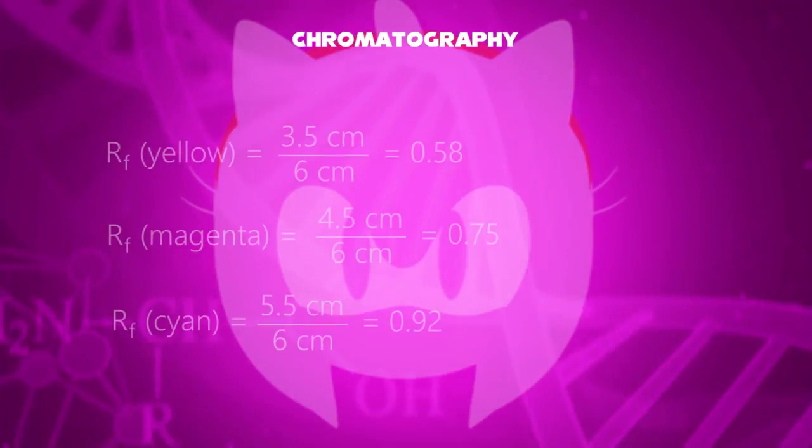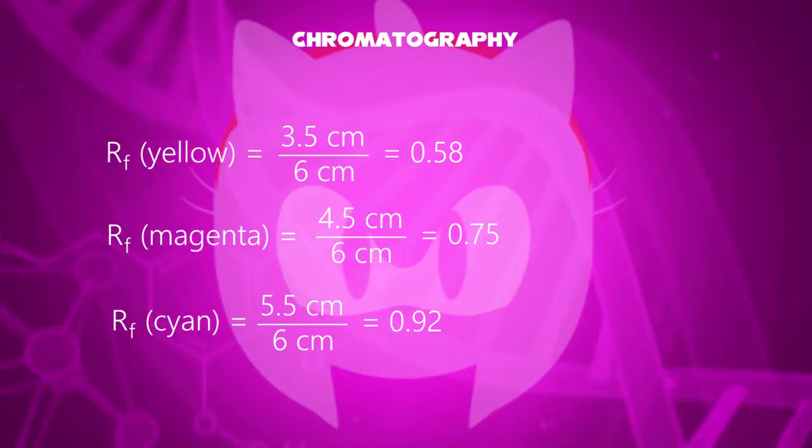Let's calculate the retention factor. Yellow gives a retention factor of 0.58. Magenta gives a retention factor of 0.75. Cyan gives a retention factor of 0.92.